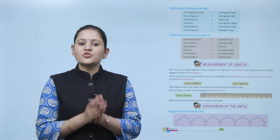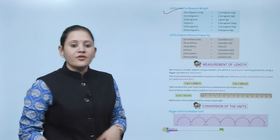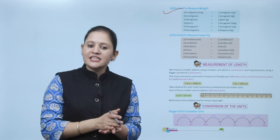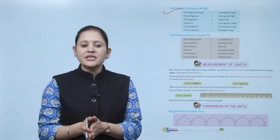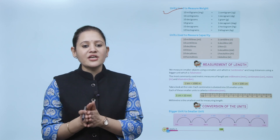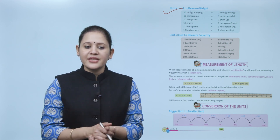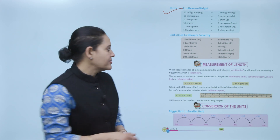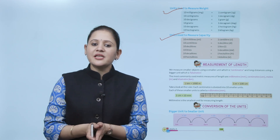Units used to measure weight: 10 milligrams equals 1 centigram, 10 centigrams equals 1 decigram, 10 decigrams equals 1 gram, 10 grams equals 1 decagram, 10 decagrams equals 1 hectogram, and 10 hectograms equals 1 kilogram.